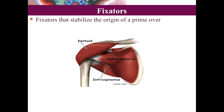Fixators are muscles that maintain the stability of a joint while another muscle produces movement. They are not doing the active movement but fix the joint so that smooth movement can occur. For example, when the deltoid abducts the shoulder joint, other muscles surrounding the shoulder contract to maintain the stability of the glenohumeral joint.